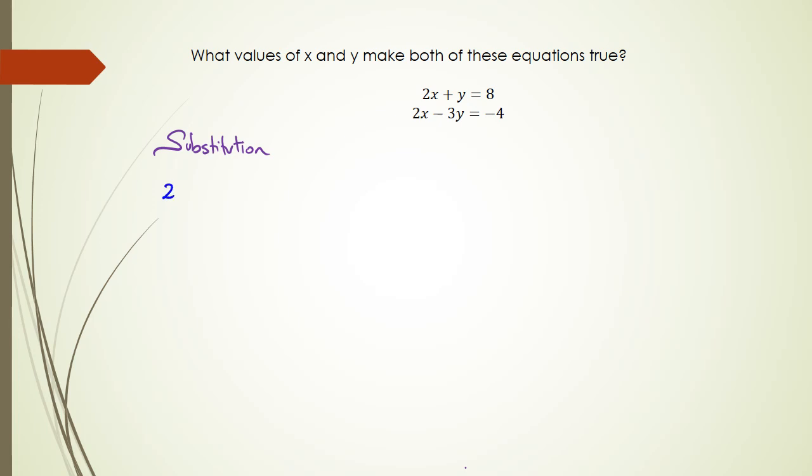Let's do substitution first. With substitution, you take the first equation, 2x plus y equals 8, and rearrange it so y is by itself. You can write this as y equals 8 minus 2x.